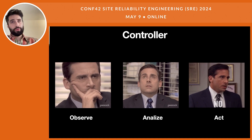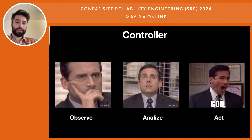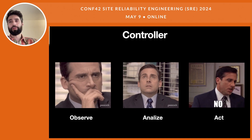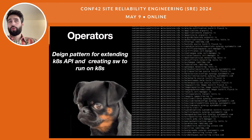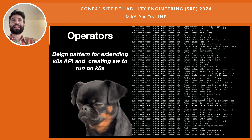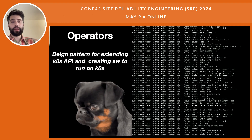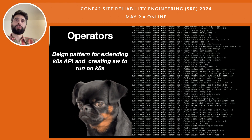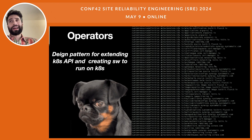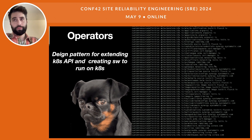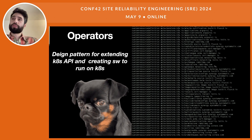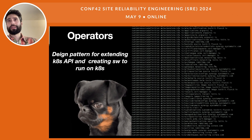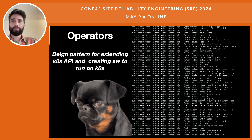The controller is basically a generic watch loop. Operators are the next step — a design pattern for extending the Kubernetes API and creating software to run on Kubernetes. Essentially, an operator is just a custom controller, a custom watch loop. Most times operators need some custom resources.